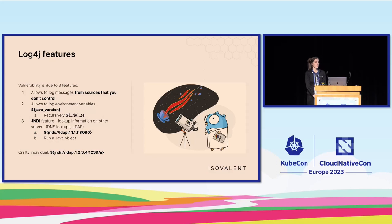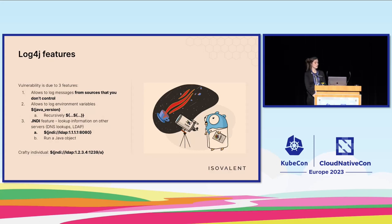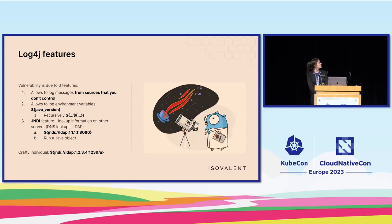Why does this vulnerability exist? It's actually due to three features — or bugs, whatever you want to call them — two of them in Log4j and the third a Java feature. The first is that the Log4j library allows you to log messages from sources you don't actually control. For example, if you're receiving data in your application, it allows you to log usernames, passwords, or error codes, return codes, and so on. The second is that it also allows you to log environment variables — if you do dollar-sign curly-brace Java version curly-brace, it will log the Java version, or the OS version.